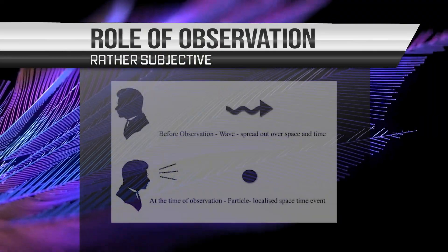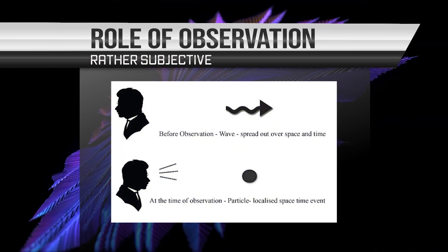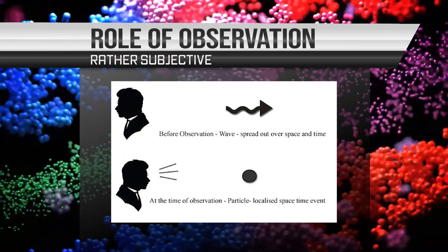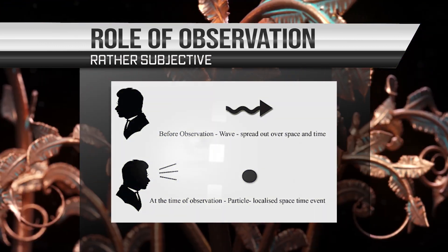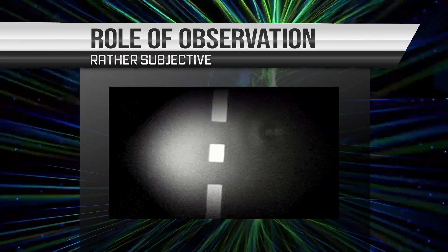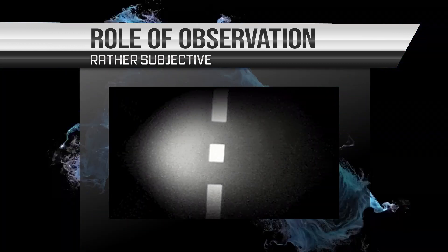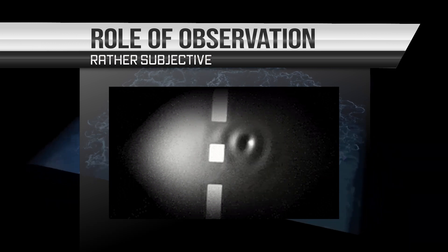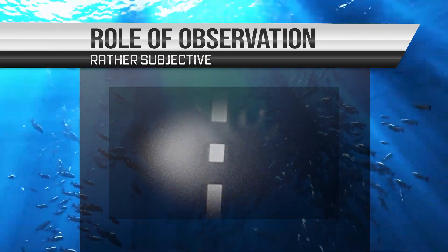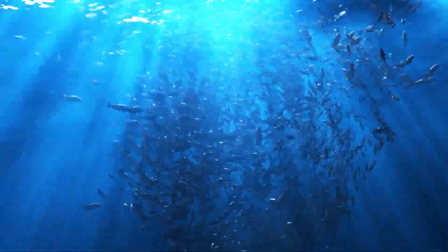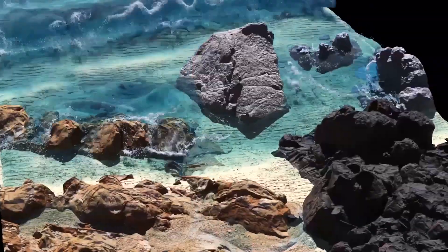The role of observation in quantum physics is a controversial topic. Some interpretations of quantum mechanics suggest that the act of observing a quantum object can affect its behavior, while others argue that observation has no effect on the object itself. This is known as the observer's paradox.